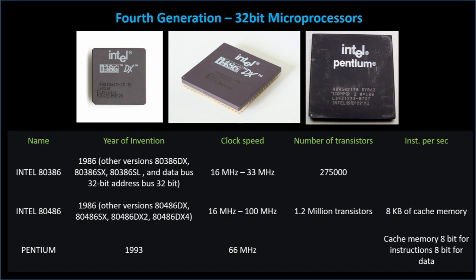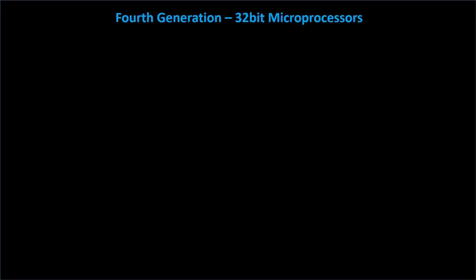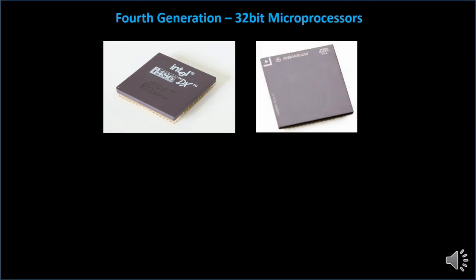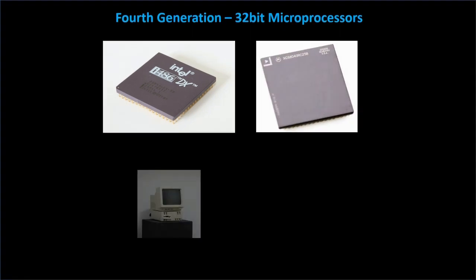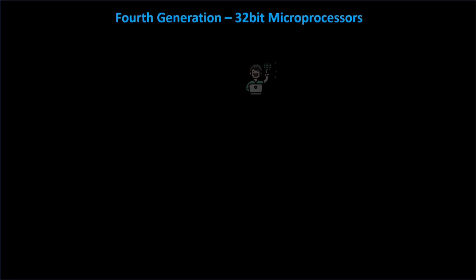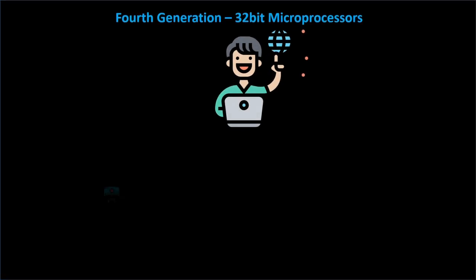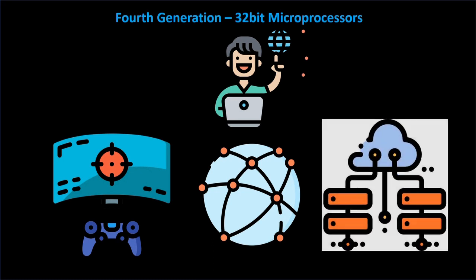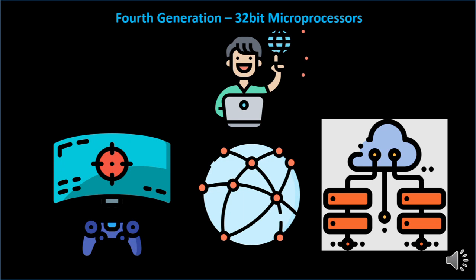The fourth generation of microprocessors coincided with the rise of personal computing, as powerful and affordable computers became available to consumers. Chips like the Intel 486 and the Motorola 68040 were used in popular personal computers like the IBM PS/1 and the Apple Macintosh. This generation enabled the development of new applications from video games to the internet to mobile computing, and RISC architecture allowed for more efficient processing, paving the way for the modern era of computing.